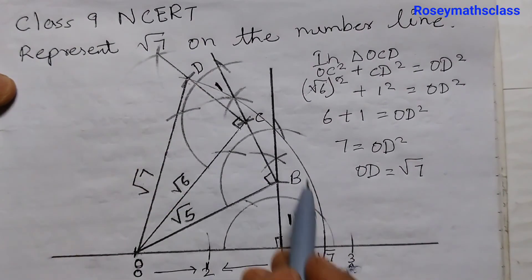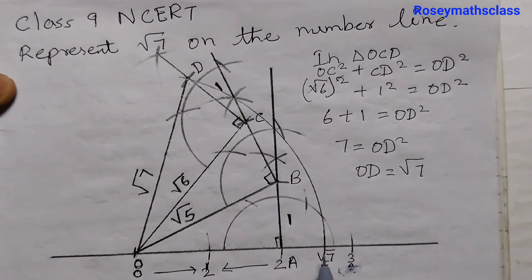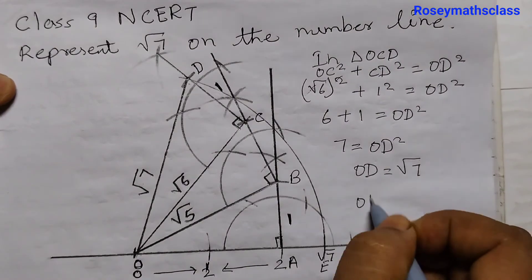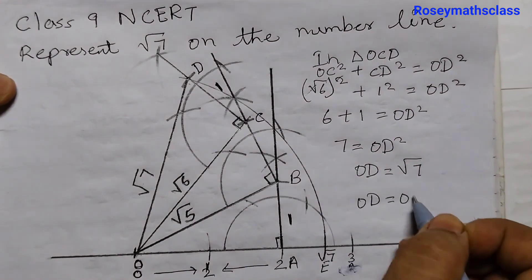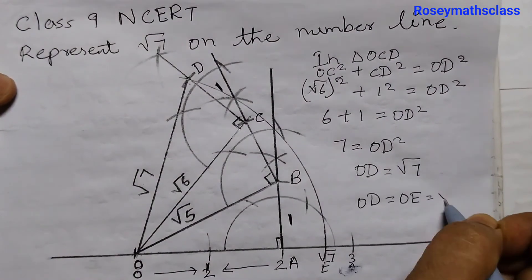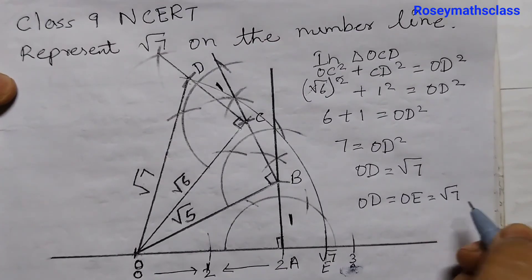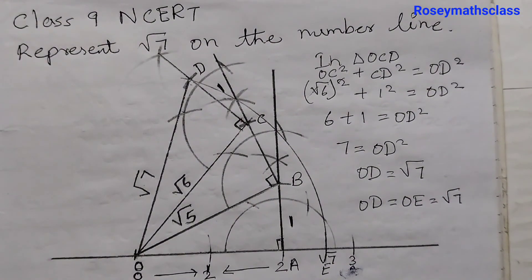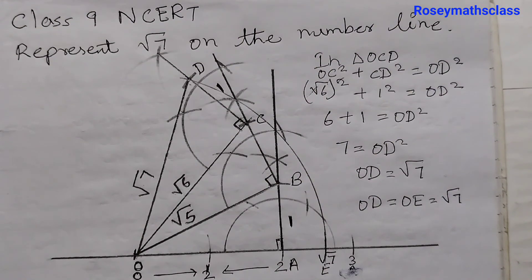And we have taken O, D as the radius and we have drawn this arc here. So therefore O, D is equal to O, E and that equals to square root of 7. I hope this is clear to all. Thank you.